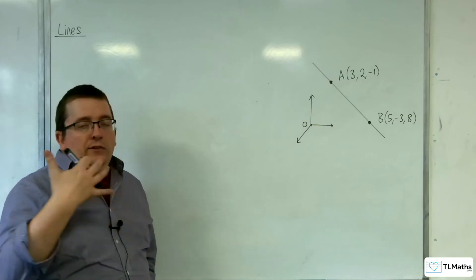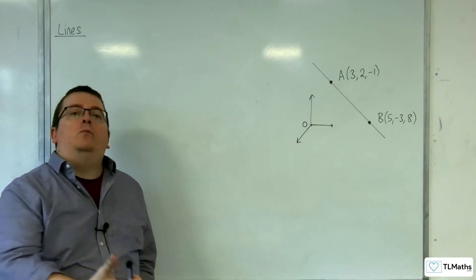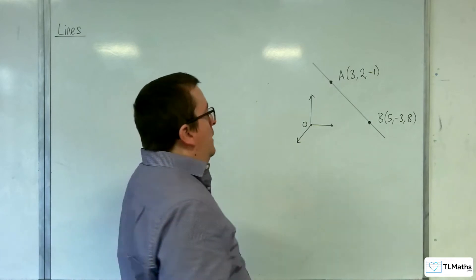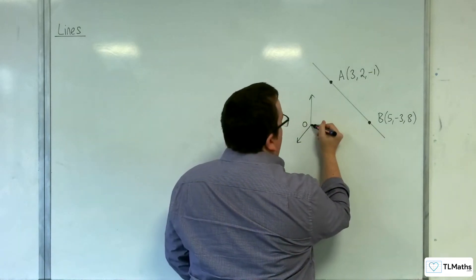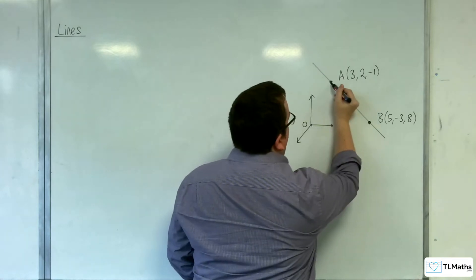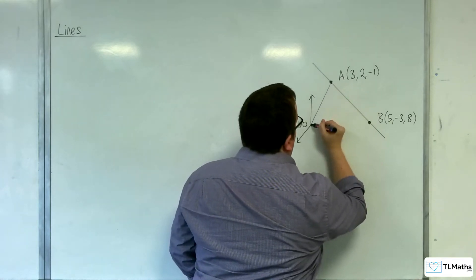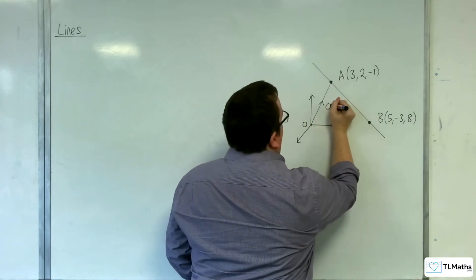So the idea is that we can use exactly the same concept as we did when we were in two dimensions. So what I'll do is I will hop onto the line using the position vector for A. So I will use OA.